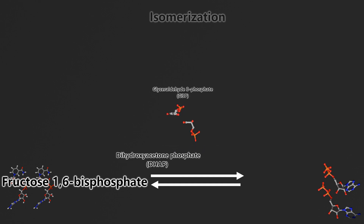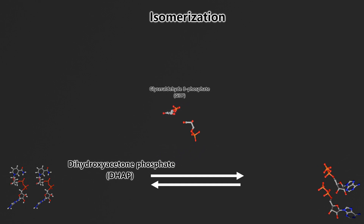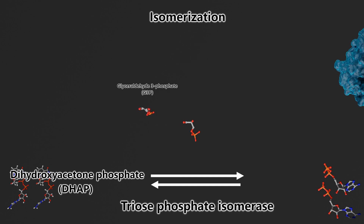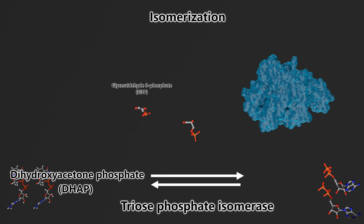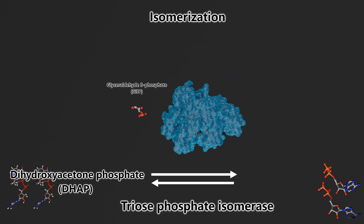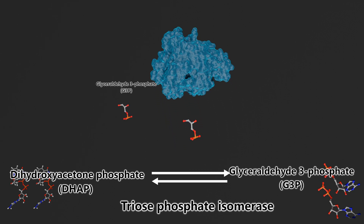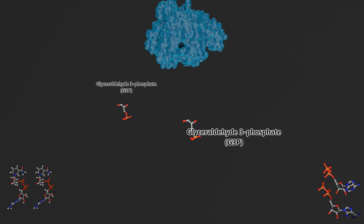DHAP is going to go through an isomerization reaction using triosephosphate isomerase as the enzyme, and that's going to give us another G3P molecule. So this is our middle step that gives us two G3P molecules, because DHAP is an isomer of G3P.